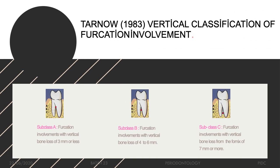A third classification is by Tarnow, which follows Glickman's horizontal component but adds a vertical subclassification. Subclass A: vertical bone loss less than 3 mm. Subclass B: vertical component between 4 to 6 mm. Subclass C: vertical component more than 7 mm. This provides a more complete characterization of furcation defects by combining horizontal and vertical components.